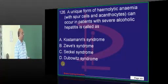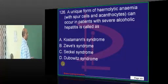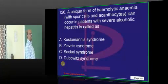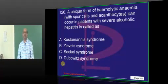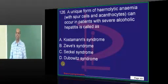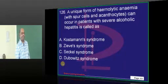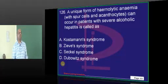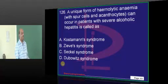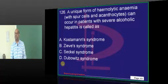Easy question actually. Now doctor, put it in 50-50 dustbin. 20-80. Very good. So, hemolytic anemia with acanthocytes in alcoholic hepatitis is called as — what was your famous answer?